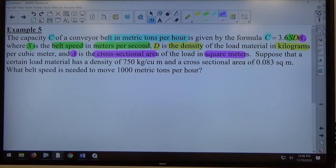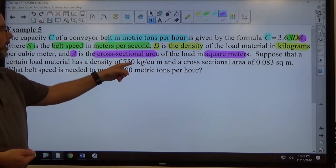So there's four letters in this problem, and they're telling you what everything is, what everything represents. They're telling you the type of unit everything's supposed to have. So if they don't specifically tell you, like for example, it says has a density of 750 kilograms per cubic meter.